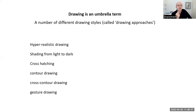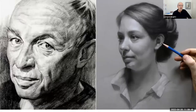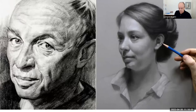In art, the drawing approaches include: hyper-realistic drawing, shading from light to dark, cross-hatching, contour drawing, cross-contour drawing, and gesture drawing. The drawing of the man is shading from light to dark; the drawing of the woman is hyper-realistic. These are not the drawing approaches we want to use because they don't approximate the kind of hand gestures I'm talking about. Cross-hatching uses straight lines at right angles to each other — again, not what we want, because we're primarily observing.